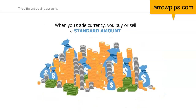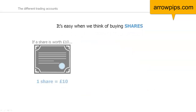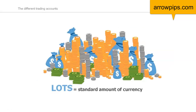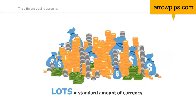Let's look at how this works. When you trade currency you buy or sell a standard amount of currency. These standard amounts are called lots in the forex industry. This is very similar to buying a certain amount of shares — you can buy 10, 20, or 100 shares and you pay the price accordingly. So when you buy or sell currency, you will buy or sell a certain amount of lots.